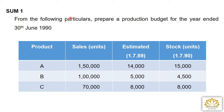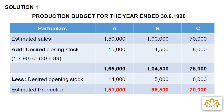Now let's look at the solution. Production budget for the year ended 3690. We open 4 columns: Particulars, A, B, C. The format of the production budget: estimated sales plus desired closing stock gives total, then less desired opening stock gives us estimated production.